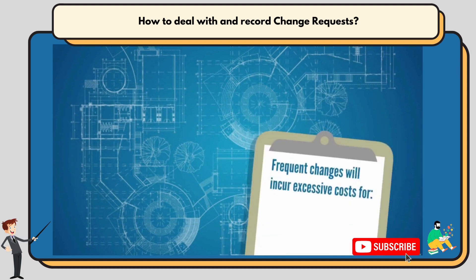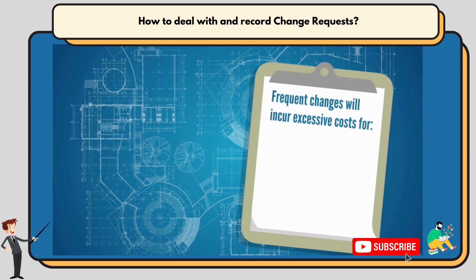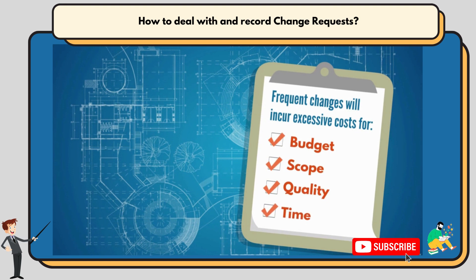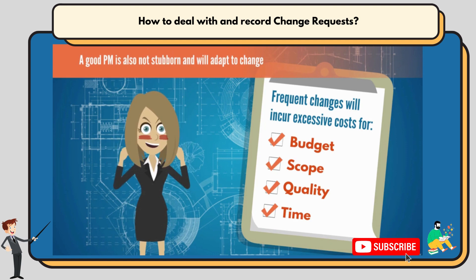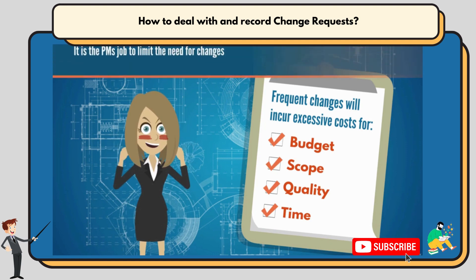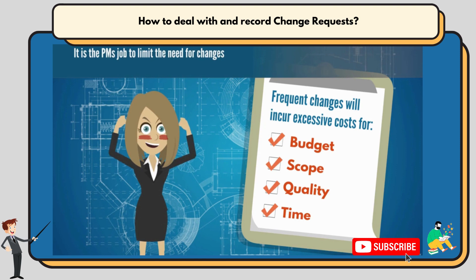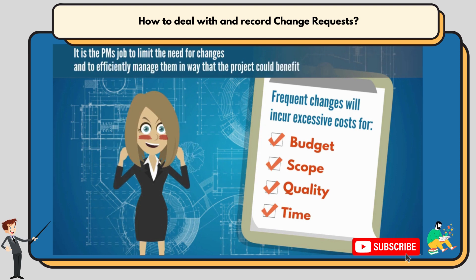In a project, frequent changes will incur excessive costs for budget, scope, quality, or time. The project manager tries to eliminate as much of this cost as possible with a detailed plan. But a good project manager is also not stubborn and will adapt to change. It's the project manager's job to limit the need for changes on one hand, and on the other to efficiently manage the changes in a way that the project could benefit.